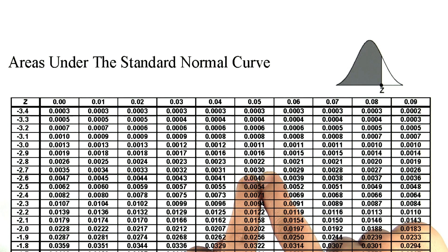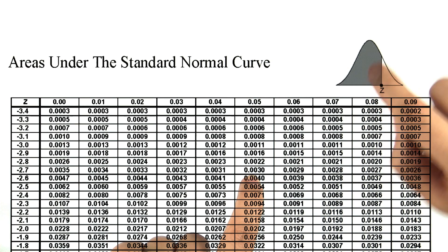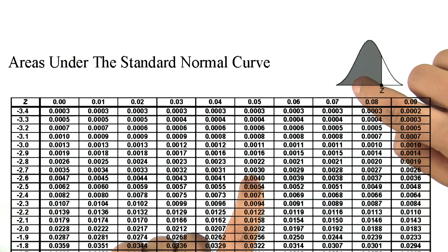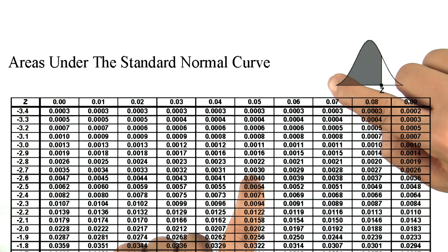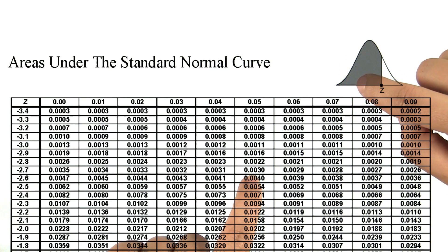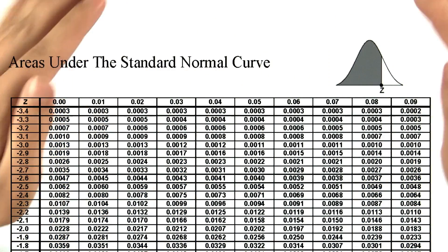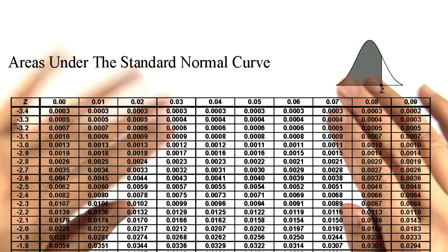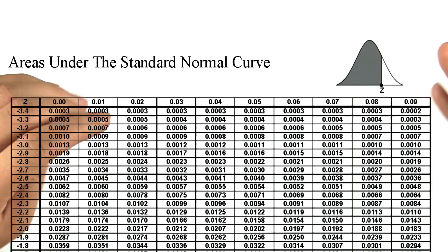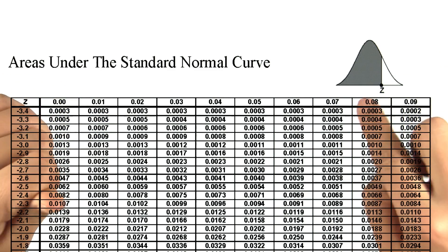So the proportion less than negative 2.75 is 0.003, or 0.3%. That's the probability that we get less than negative 2.75, and that's the proportion of objects in the sample that have a score less than negative 2.75.